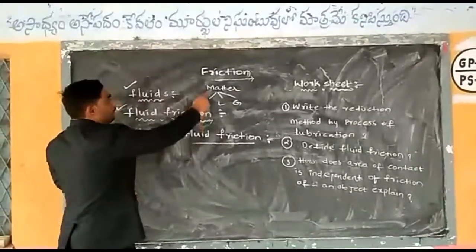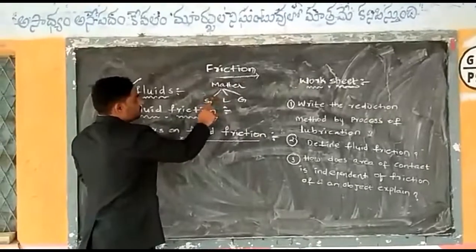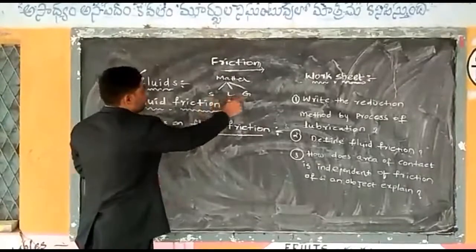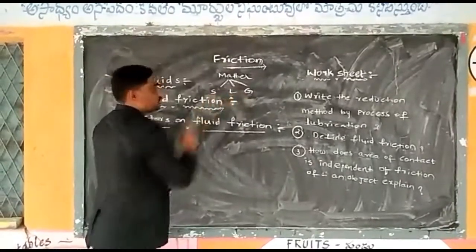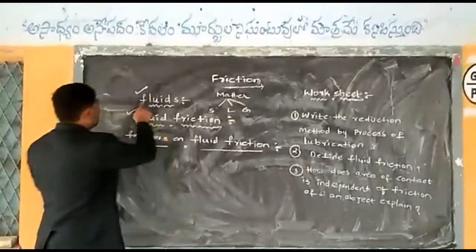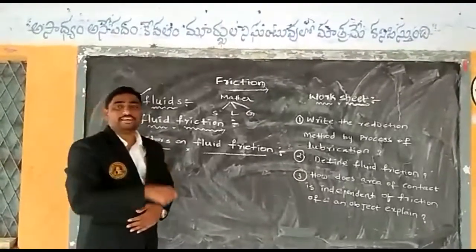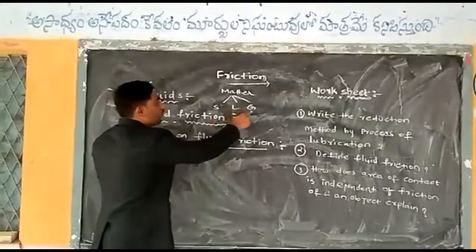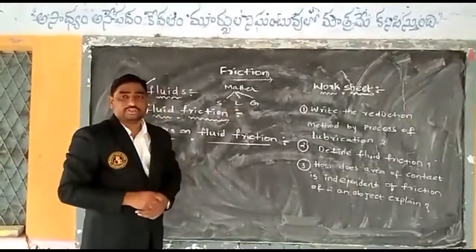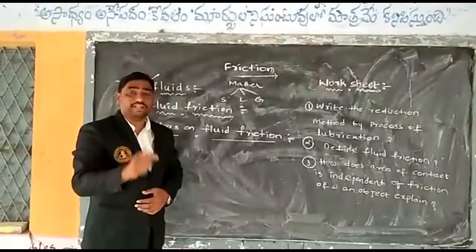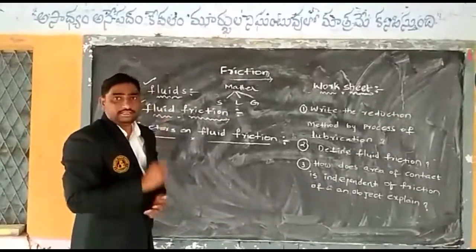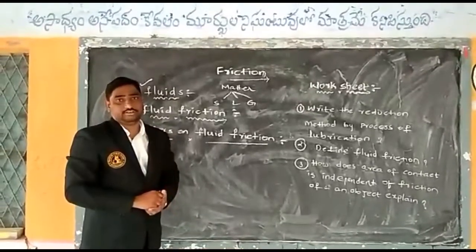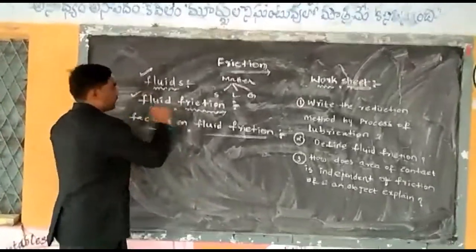Matter exists in three states: solid, liquid, and gases. Among these three states, liquids and gases together are called fluids. When objects move through liquids or gases, they offer resistance to the movement of the object. This type of resistance is known as fluid friction.